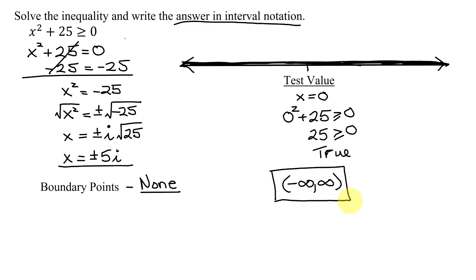One last thing I want to point out is what if my original inequality had been x squared plus 25 is less than or equal to 0? I'd have looked for boundary points the same way. I wouldn't get any boundary points. I'd only have one interval again on the number line. And the test value I would pick again was x equals 0.